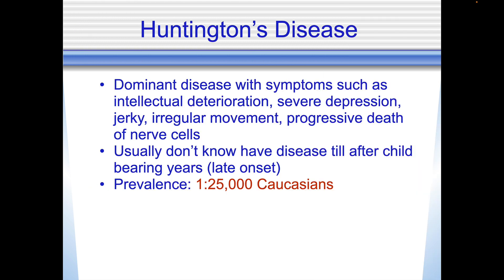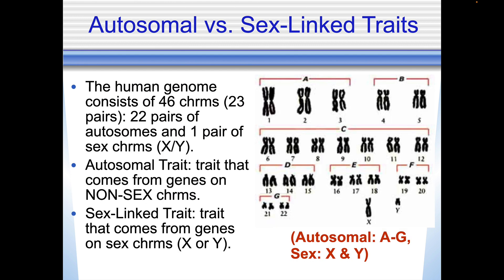Huntington's disease is a dominant disease that results in deterioration of your nervous system and progressive death of nerve cells. You will eventually die from that disorder.